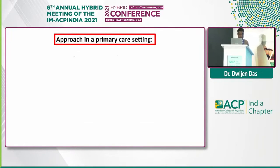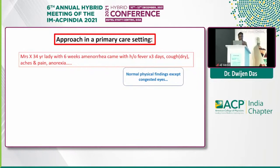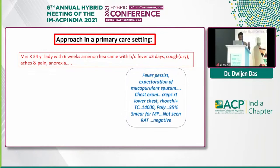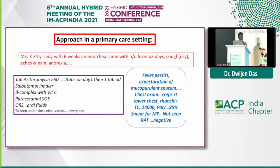In primary care, I'm giving an example: a 34-year-old lady with six weeks of amenorrhea came with a history of fever for three days, with a cough of dry nature associated with aches, pains, and anorexia. Examination findings were apparently normal except some conjunctival pallor. We thought it to be viral, and we started dextromethorphan as the cough suppressant, which is said to be safe in pregnancy, along with vitamin C. But after five to seven days, the patient came back with persistent fever, cough with mucopurulent expectoration, and chest examination showed some amount of crackles. COVID was negative, so we thought it was a secondary bacterial infection and started azithromycin with sulbactam inhalation, and the patient got some amount of recovery.